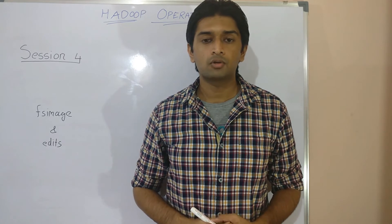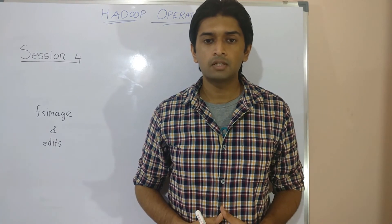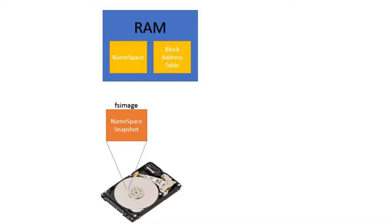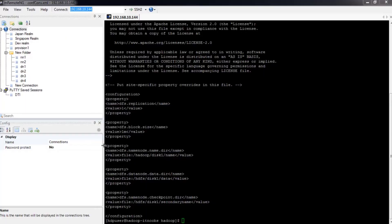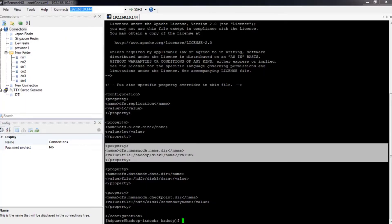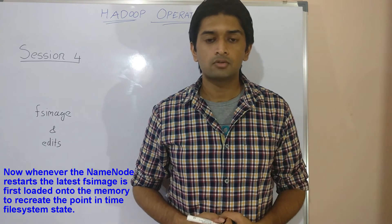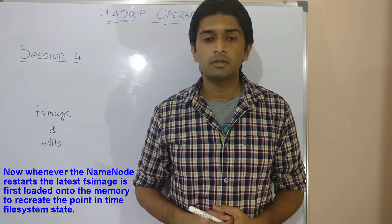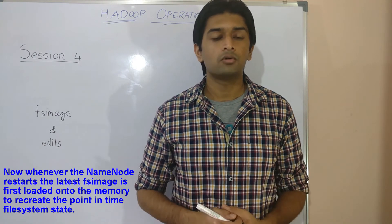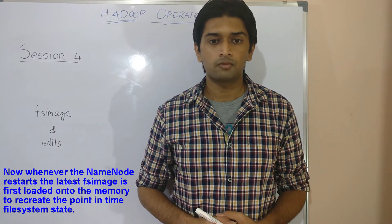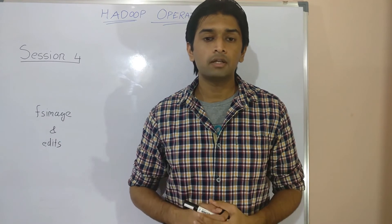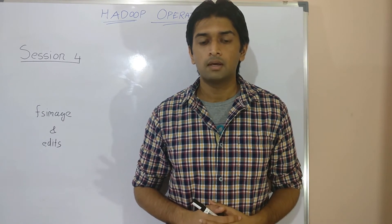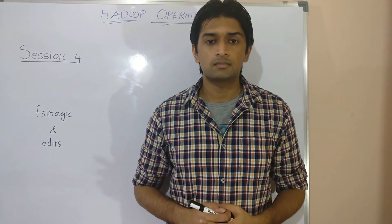To address this, the NameNode maintains a snapshot of its in-memory namespace information on its local hard disk, stored in a file called fsimage. This file is stored on the NameNode and its directory path can be specified in the HDFS configuration file. Whenever the NameNode restarts or reboots, the latest fsimage is loaded from disk into memory to recreate the point-in-time state of the file system. It is therefore important that fsimage stays in continuous sync with the in-memory file system state.